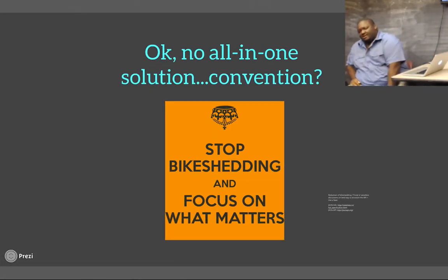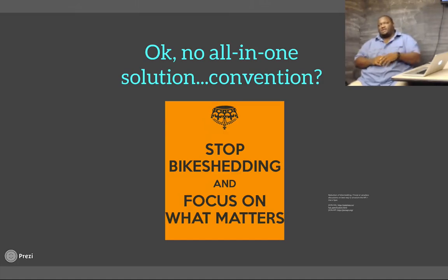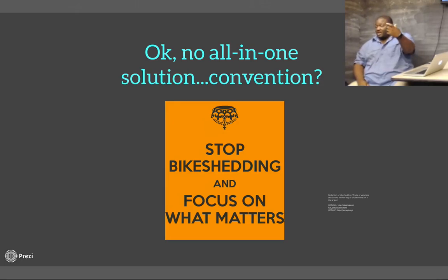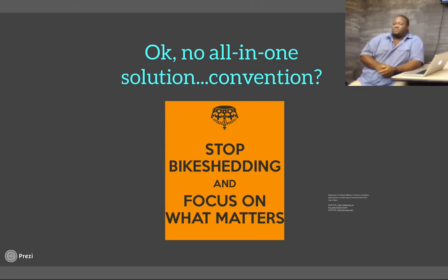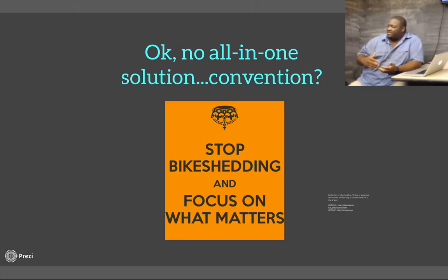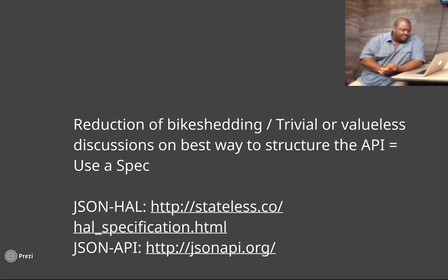The top thing that would cause us to slow down was the bike-shedding. How should the API look? Should you have a data node at the root level, put the name of the class — people as the root node — a person as the root node, or put data? If you've ever built an API from scratch without following any convention, these conversations are just really frustrating because they don't get to the value of what we're trying to do. How can I get rid of the bike-shedding and focus on what matters?